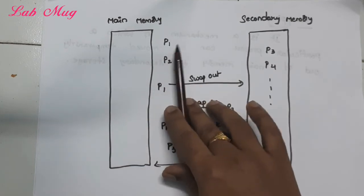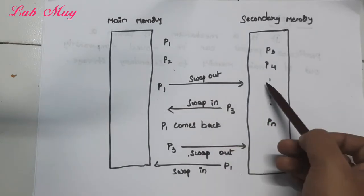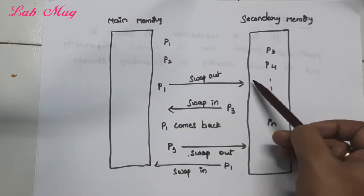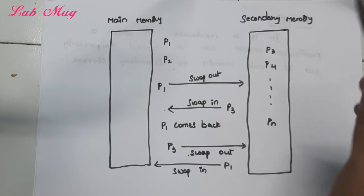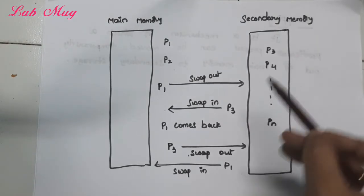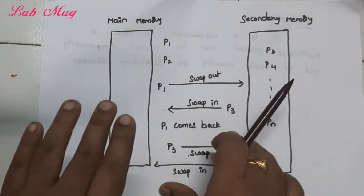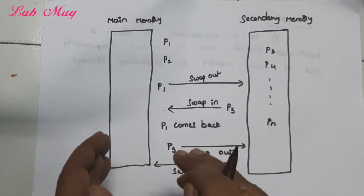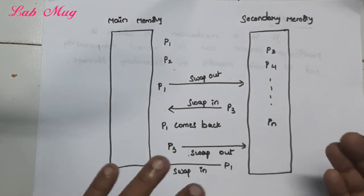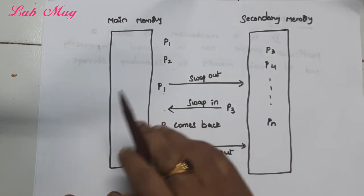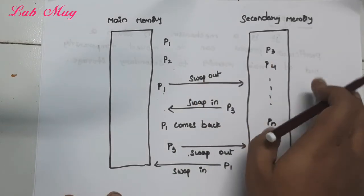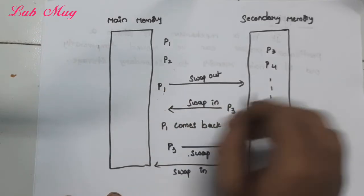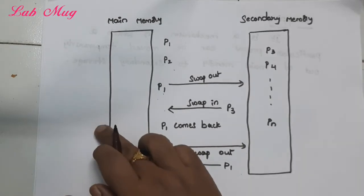Suppose P1 process completes — then P1 is swapped out, meaning it comes out of main memory. Once swap out happens, one process gets a chance here. So for that, P3 from secondary memory is swapped in — meaning it comes into main memory. That process from secondary memory replaces the one that came out from main memory — that is swap out. So don't confuse: P1 was already in main memory, and that is swap out to secondary memory. When P1 is swapped out, then P1's memory is free.